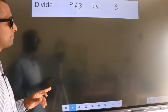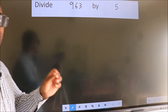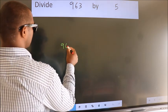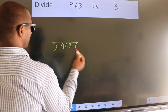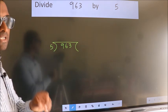Divide 963 by 5. To do this division, we should frame it in this way. 963 here, 5 here. This is your step 1.